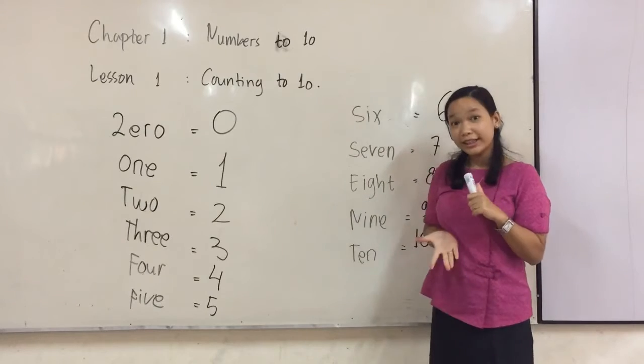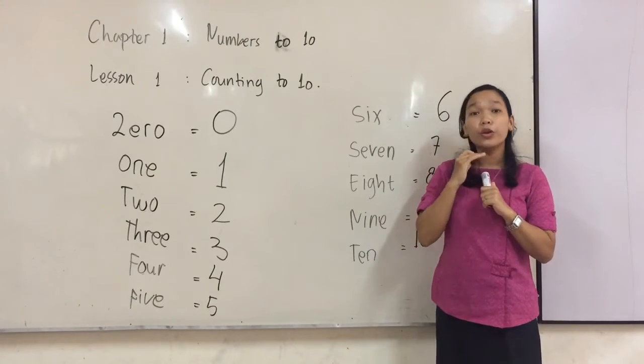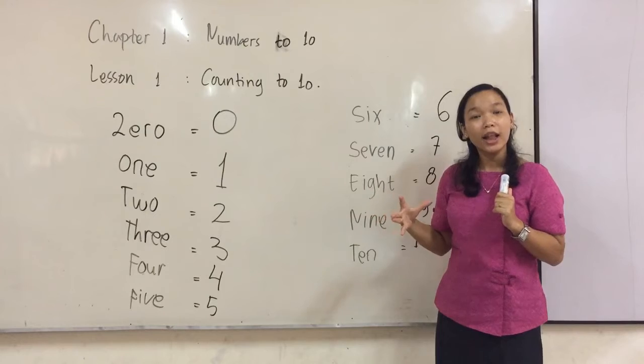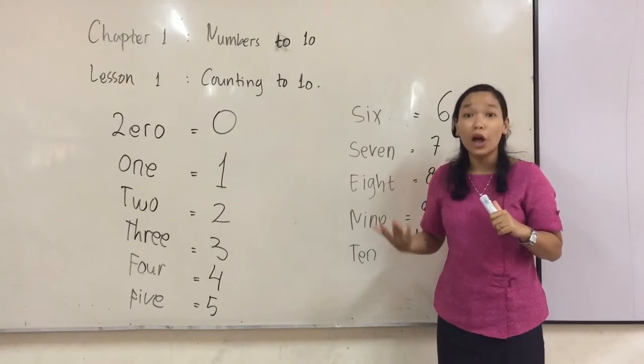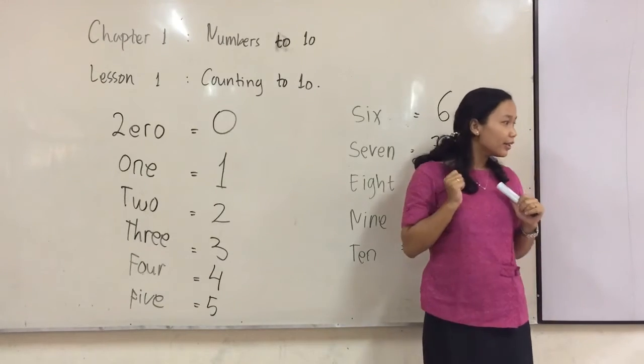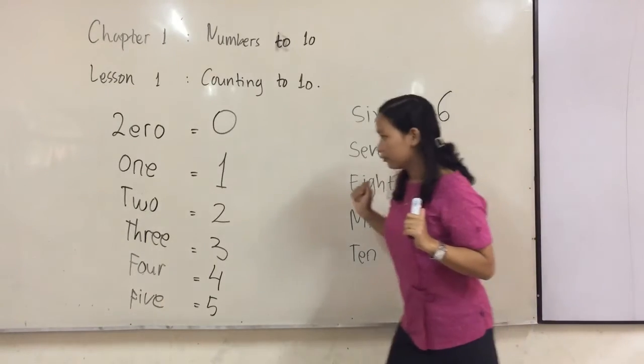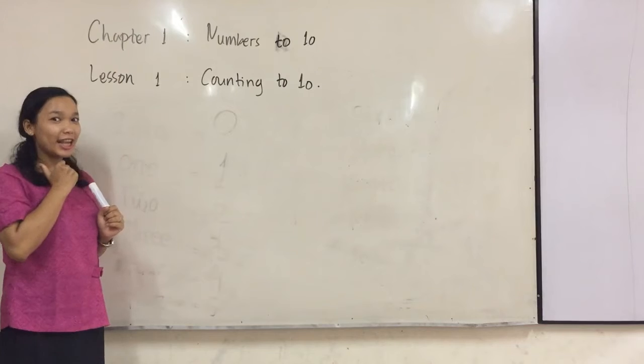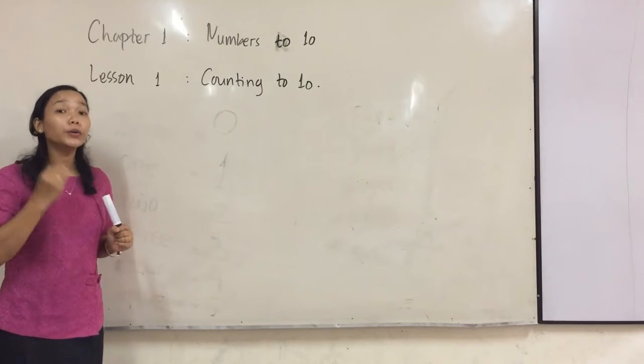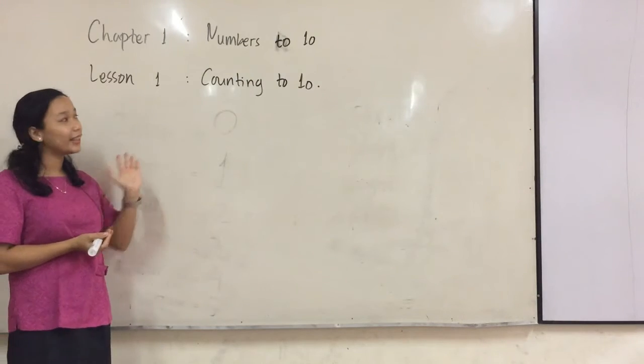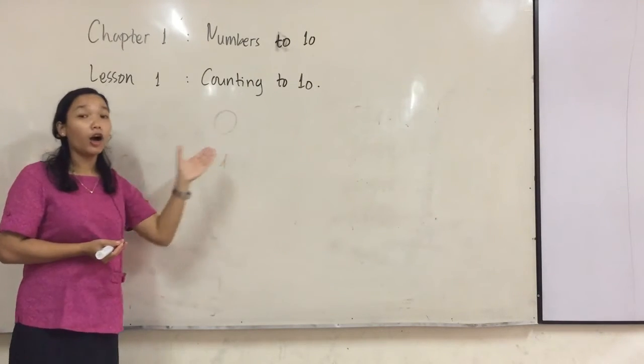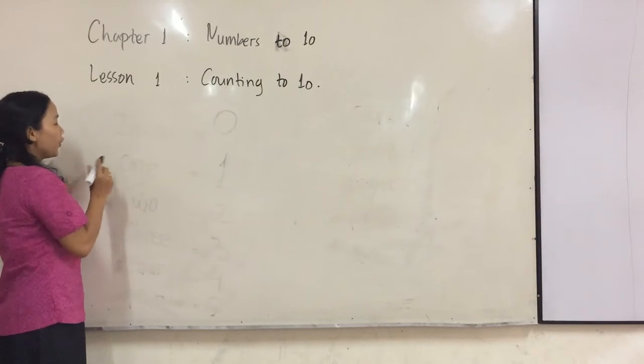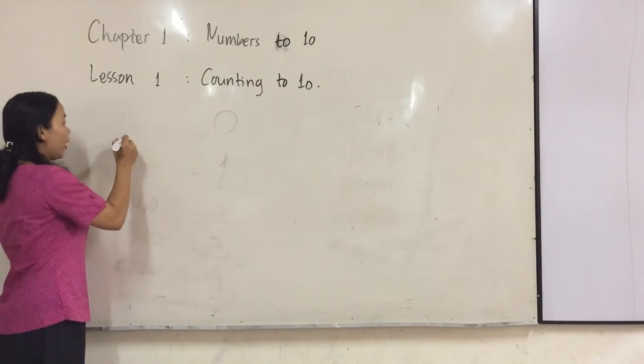I have something for you. I will draw flowers on this board, and then you have to count how many flowers. Ready? Give me time to create the board. Here is your activity today. Let's practice how to count. Because our title is counting to ten. I will write on the board and then you have to count. Ready? Good!